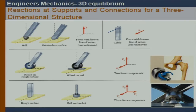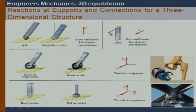In the case of a member resting on a frictionless surface, the movement is restricted in one direction, so we get just one support reaction. Similarly, for a cable attached to the body, the motion is only prevented along the direction of the cable, and therefore we get that as the reaction onto the ball.